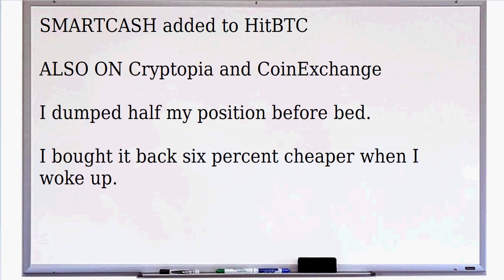I dumped half my position yesterday at about 1,500 and change, because my position was double normal size. Sometimes it's higher and I want it to be three or four times larger than a normal bet. But I noticed a very large sell order on the CoinExchange, and when I see something like that, it's oftentimes an indication the market may go down some basis points. So I thought, let's sell half.